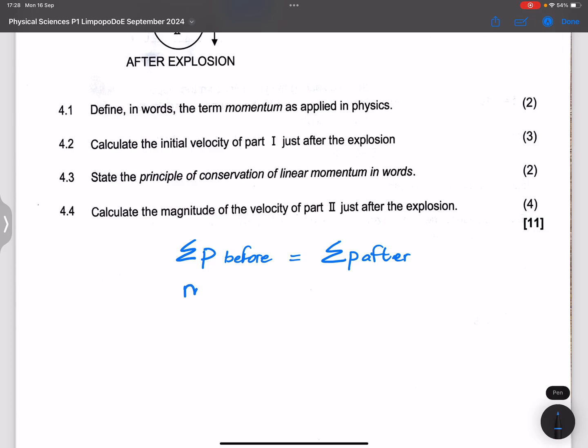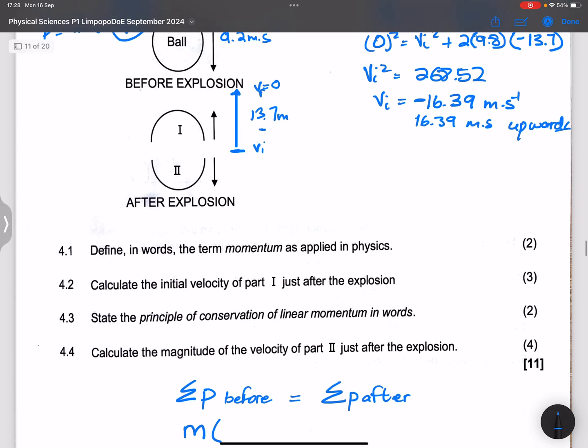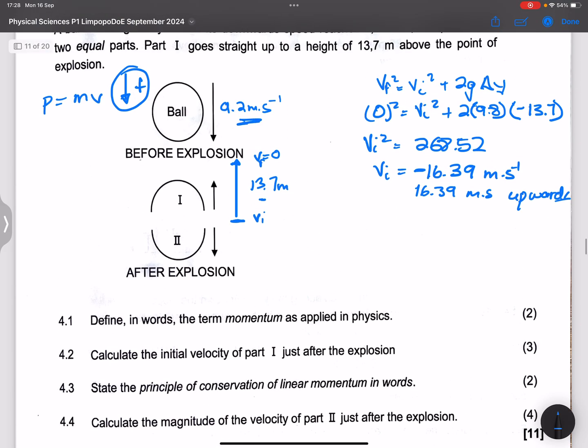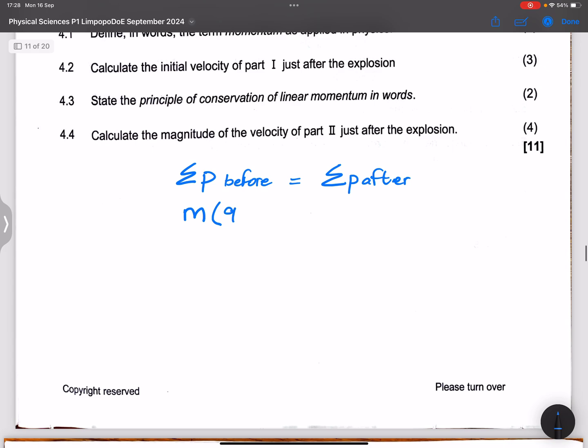So the whole mass is mass m, but the velocity they were moving at 9.2 meters per second, that's 9.2 meters per second downwards, and we said down is positive.